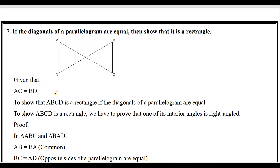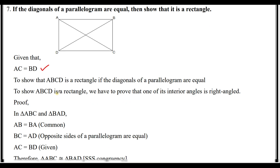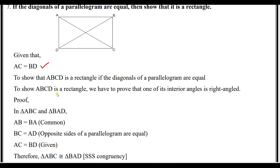Very important theorem: if the diagonals of a parallelogram are equal, then show that it is a rectangle. Let ABCD be a parallelogram. The given condition is that the diagonals are equal — that is, AC equals BD. We need to show that ABCD is a rectangle. To prove ABCD is a rectangle, if we prove that one of the interior angles is 90 degrees, then it is a rectangle.